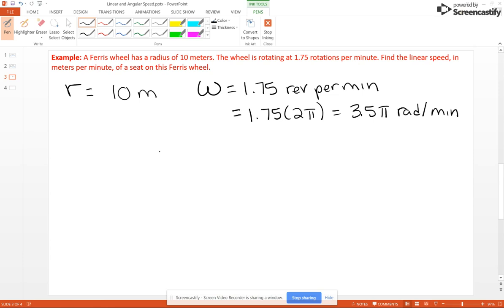We want to find the linear speed in meters per minute of a seat on this Ferris wheel. So linear speed is R times omega, so 10 times 3.5 pi, and that's going to give us of course 35 pi. This is in meters per minute.